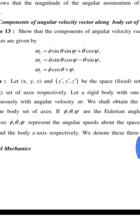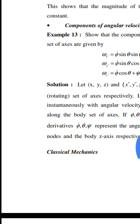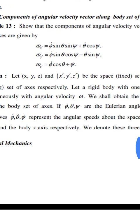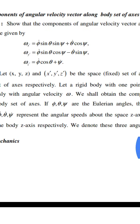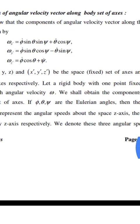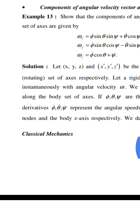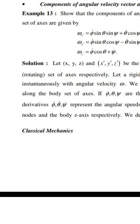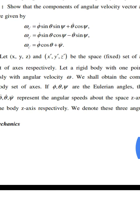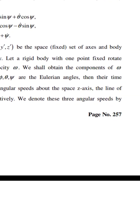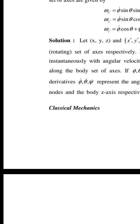Let the body set of axes and the body rotating set of axes be defined respectively. Let the device with one fixed point rotate instantaneously with angular velocity omega. We shall obtain the components of omega along the body set of axes.